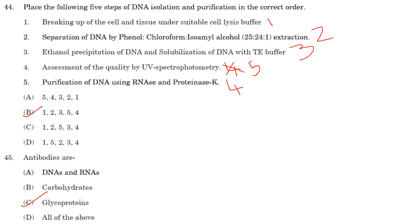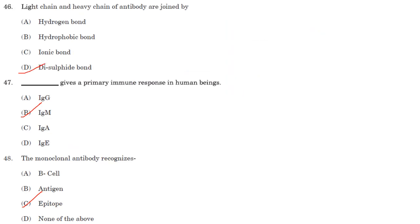Antibodies are glycoproteins — answer is option C. The light chain and heavy chain of an antibody are joined by disulfide bonds. IgM gives a primary immune response in human beings — answer is option B. The monoclonal antibody recognizes a unique epitope — answer is option C.